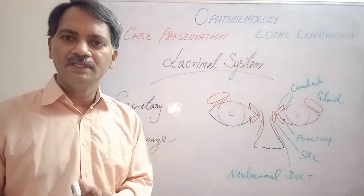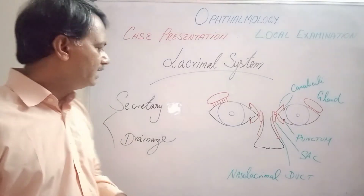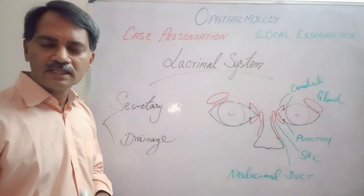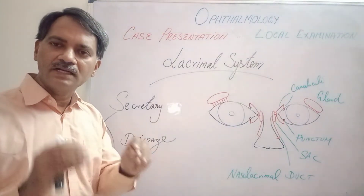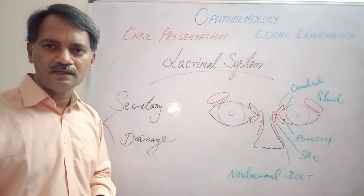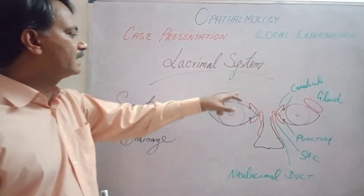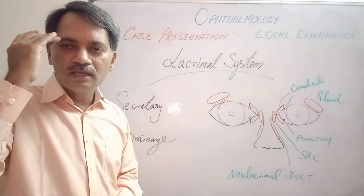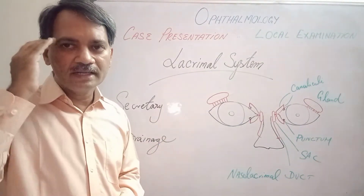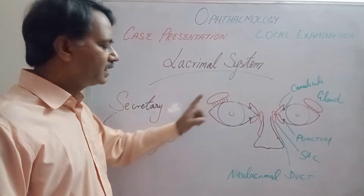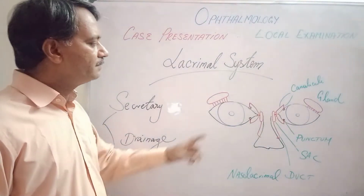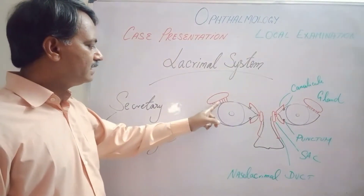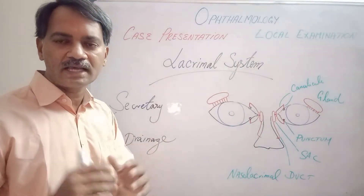The lacrimal system has a secretory part and a drainage part. The secretory part has several glands in the eye, but the major gland is the lacrimal gland, situated just below the roof of the orbit on the temporal side — supra-temporal to the eyeball. From there, tear fluid is secreted and through several ducts it reaches the conjunctival sac.